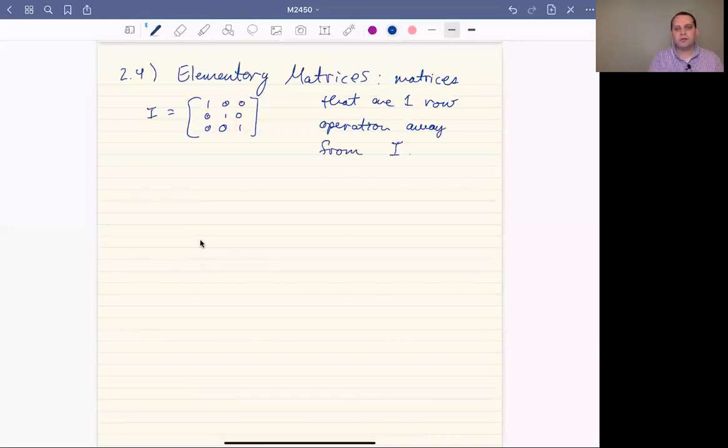So there's three types of elementary matrices. And that's because there's three row operations. So the first type, by the way,